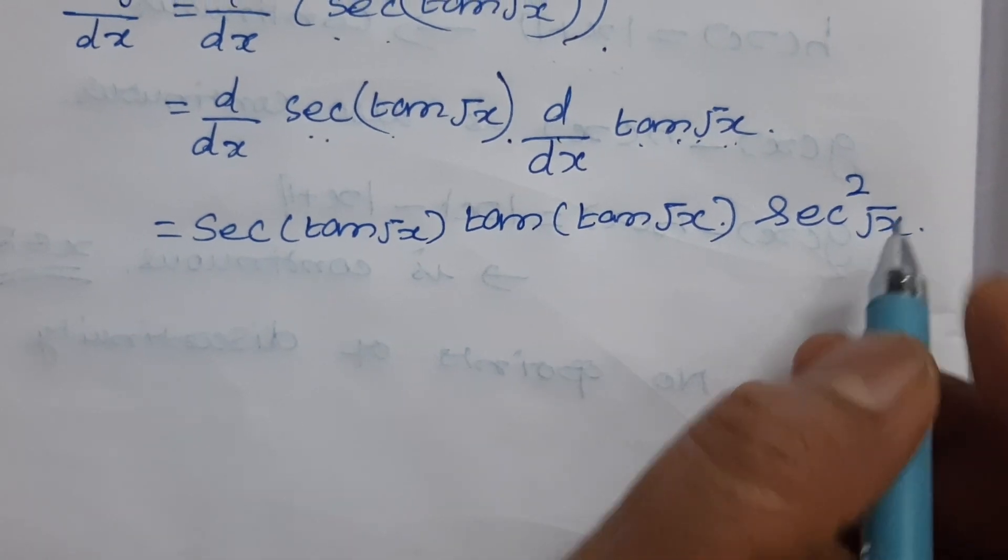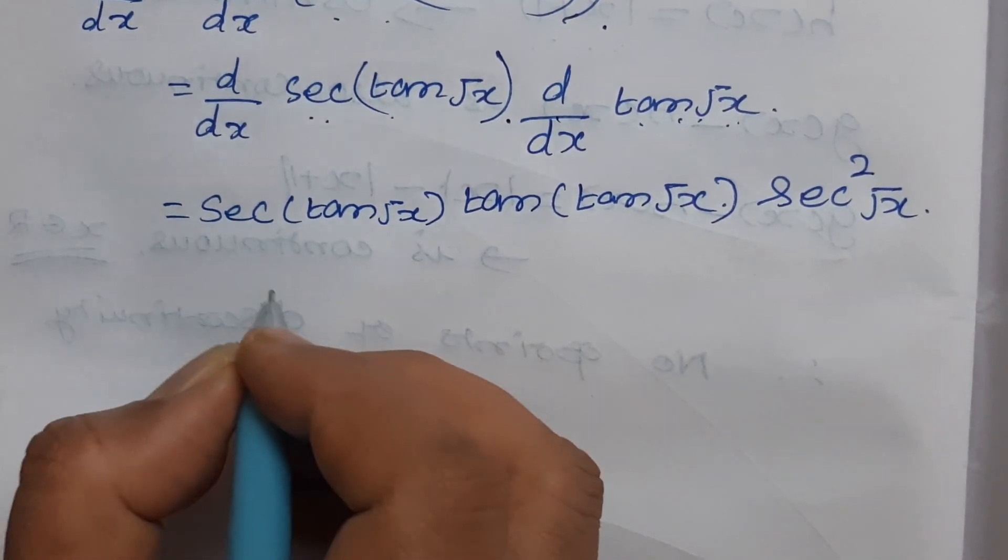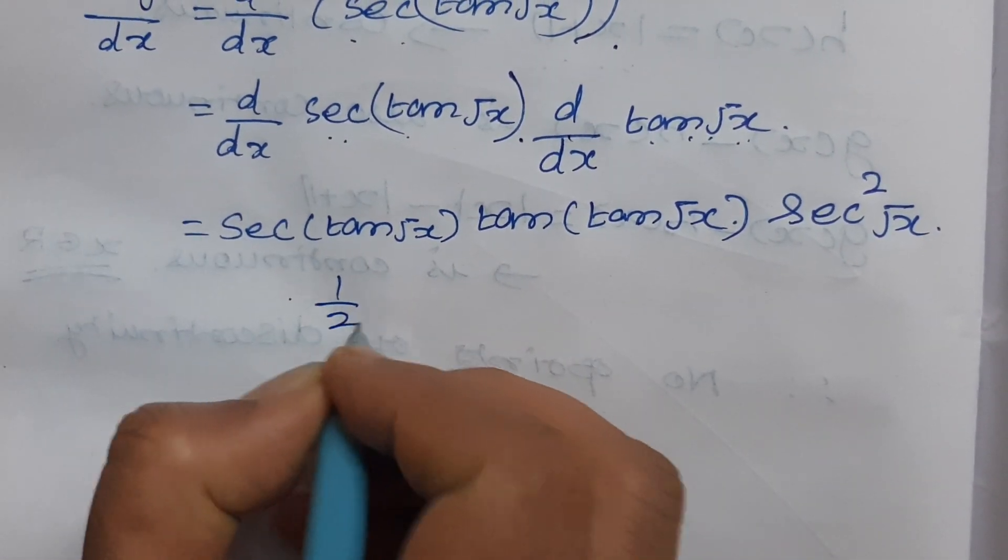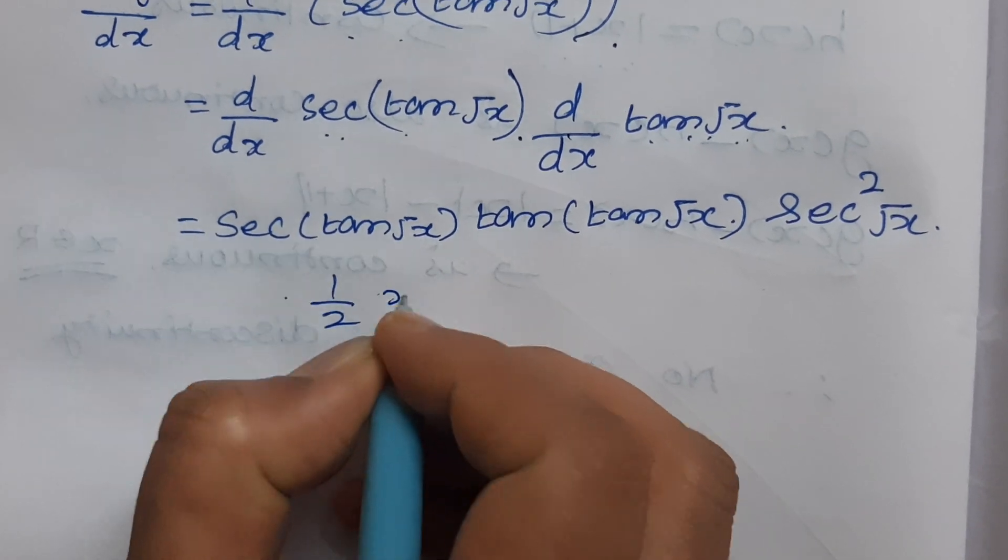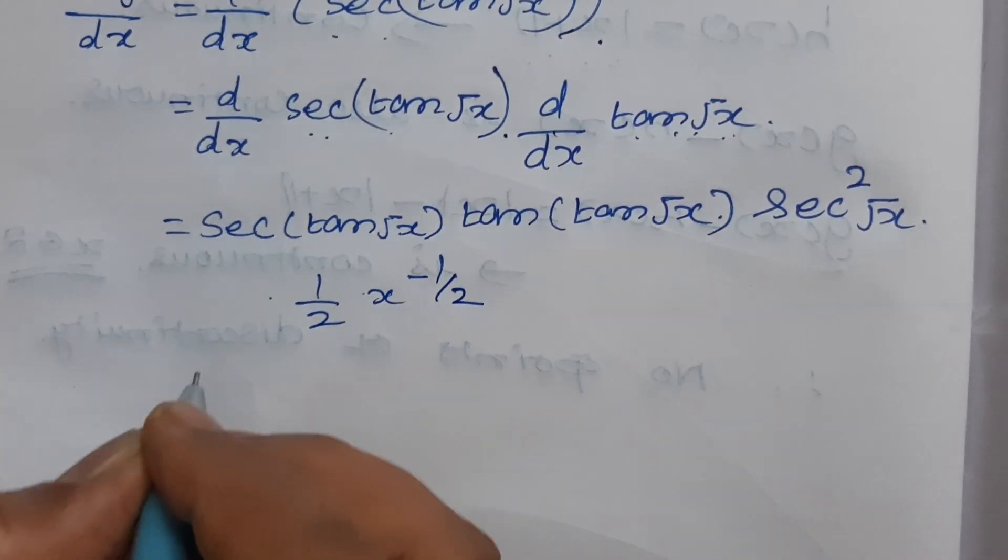Sec²(√x) and differentiation of √x equals 1/(2x^(1/2)) or x^(-1/2). The answer is sec²(√x).